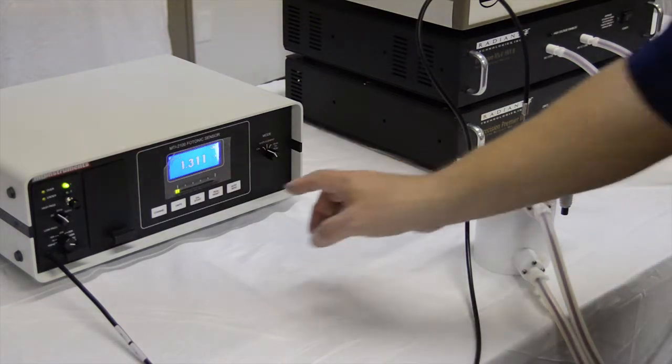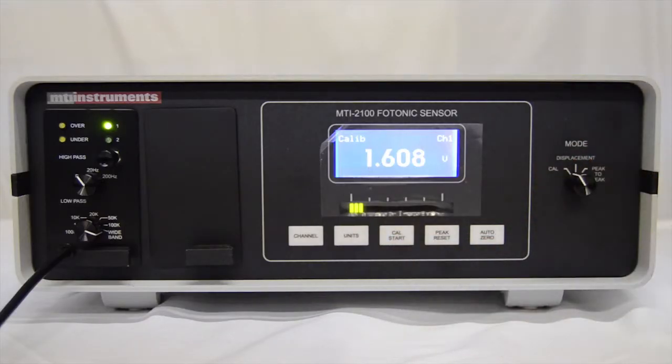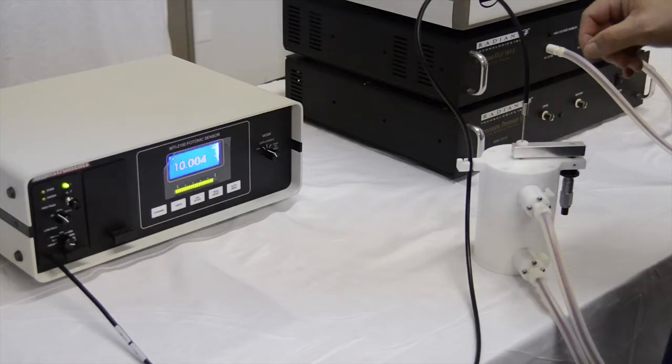I calibrate by pressing the Cal Start button on the front panel of the MTI. What this is going to do is relate the 10 volt maximum output at the rear panel of the MTI to the maximum signal input of the MTI sensor wand.